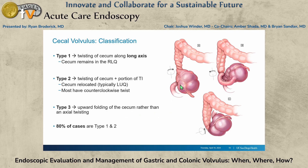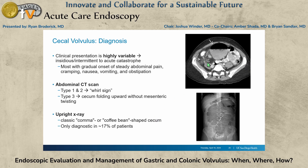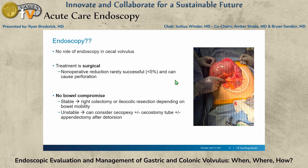Then there's cecal volvulus. It can volvulize across multiple planes. This is high risk for failure with endoscopy and high risk for perforation — it's diagnosed with the whirl sign on CT scan, and you can also see it as a cecal bascule. The role of endoscopy for cecal volvulus is generally: no. Treatment here is surgical. You're not going to be able to decompress that far into an unprepped colon with a giant cecum. Depending on bowel compromise, you can perform colectomy versus cecopexy, but endoscopy doesn't really have a role in cecal volvulus.